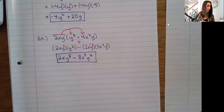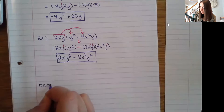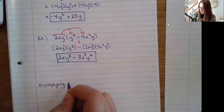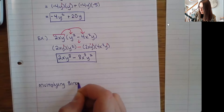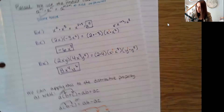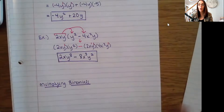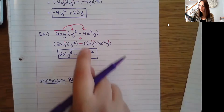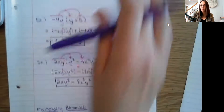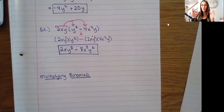Now I'm going to kick it up a little bit and bring in multiplying binomials. Remember that binomials are polynomials with two terms. So here I have a binomial and a binomial — one term, two terms. Instead of just multiplying a monomial on the outside, we're going to actually multiply two binomials together.